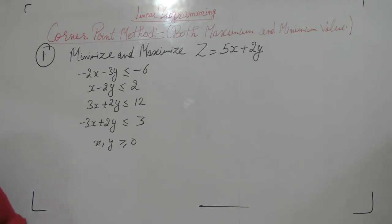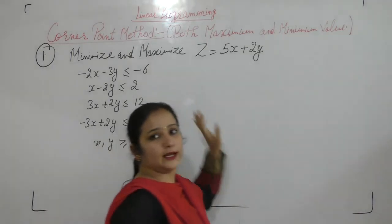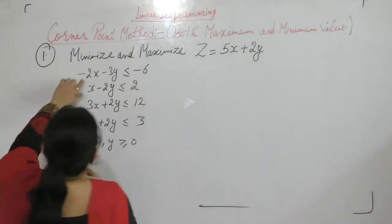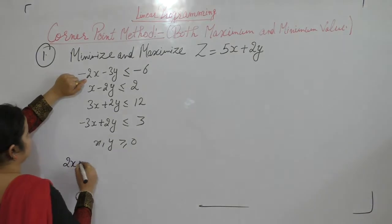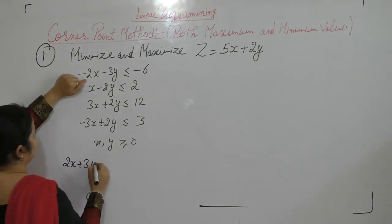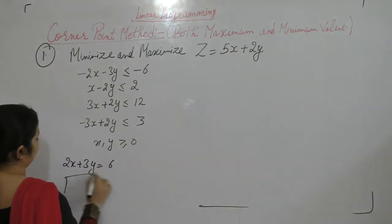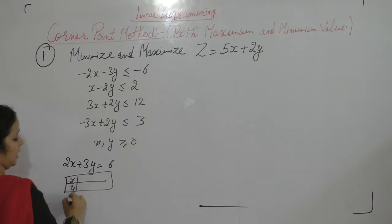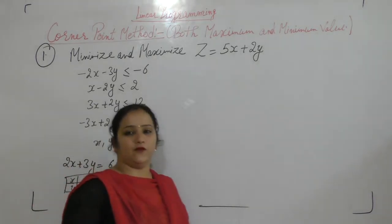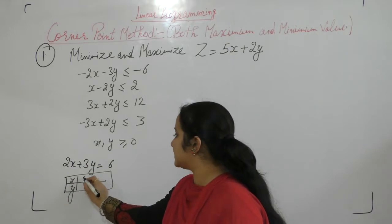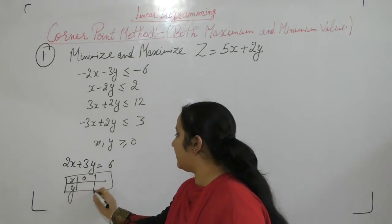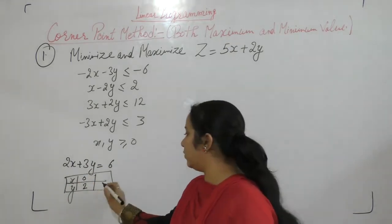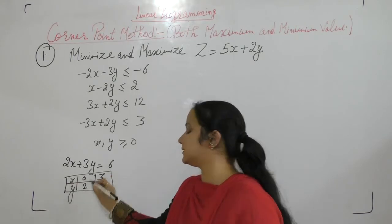First we convert these inequalities to equalities. The first equation becomes 2x plus 3y equals 6 by taking the negative sign common. Putting x equals 0 gives y equals 2, and putting y equals 0 gives x equals 3.